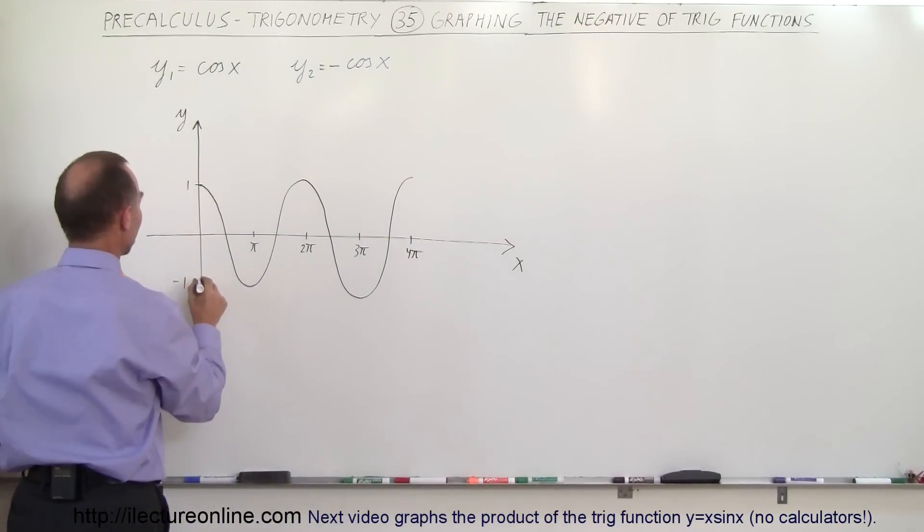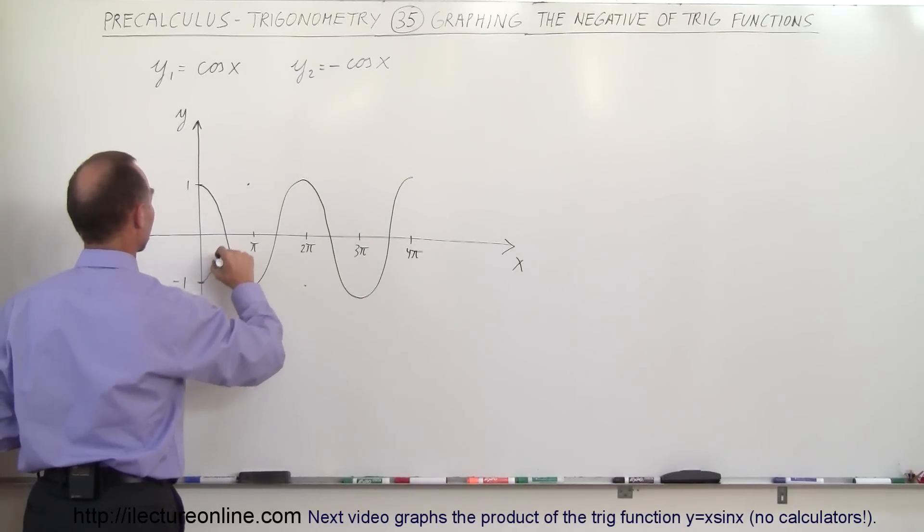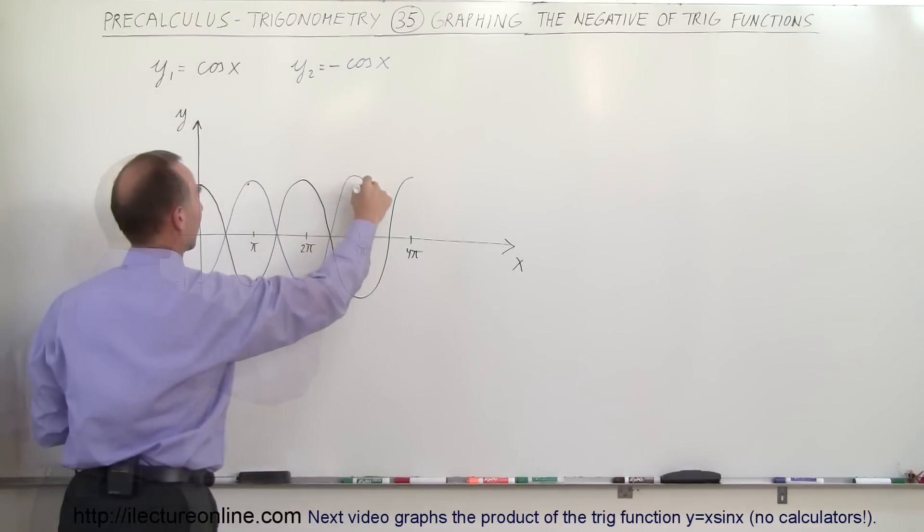So a positive one becomes a negative one and a negative one becomes a positive one. Positive one becomes a negative one, and simply what that function would look like, it would look like this, the exact opposite.